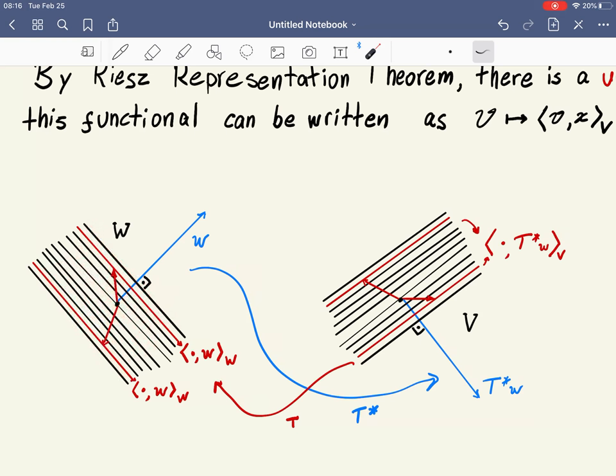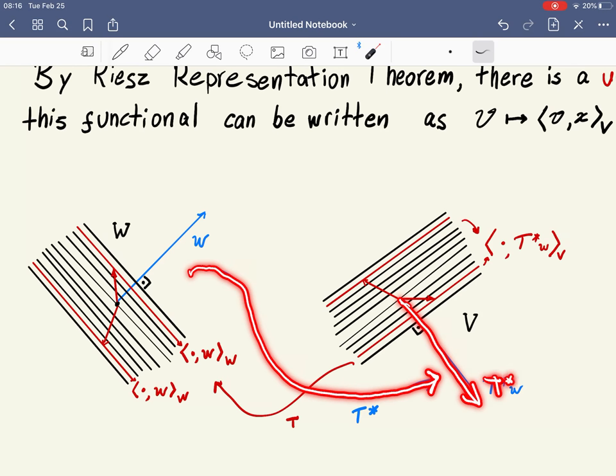And now the adjoint is defined like this. So this is what we want to define, we want to define what's the adjoint of T, which is a vector that maps w onto T star w. This is what we want to define as the adjoint, and we're going to do it in a very indirect way. And how is it?